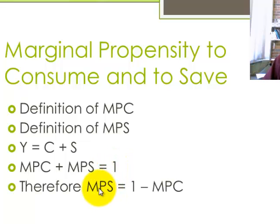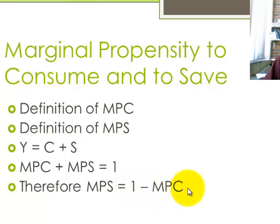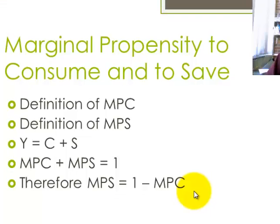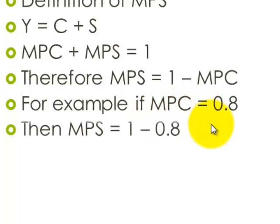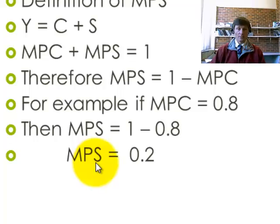I would also represent this a little bit differently. I would say the marginal propensity to save is the amount of income that I get as a whole less the amount that I consume — spend. Using the example from before, if the marginal propensity to consume is 0.8, therefore the marginal propensity to save is 0.2.